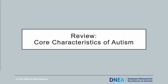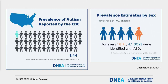Let's begin by reviewing the core characteristics of autism. According to the CDC, the current autism prevalence rate is one in every 44 children. Autism is four times more common in boys than in girls. We don't know what is causing the increase in prevalence, but it could be due to changes in how children are identified, diagnosed, and served in their communities, as well as continued reductions in racial or socioeconomic disparities.